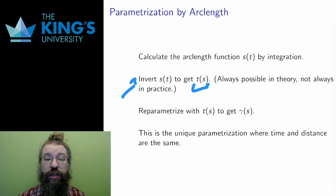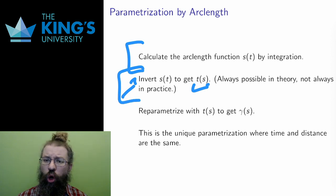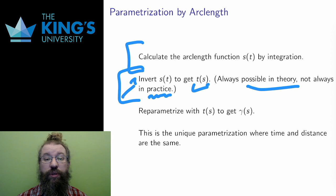First, calculate the arc length function S of t. Invert S of t to get some expression t of s. This is always possible in theory, but not always in practice. That is, the inverse exists, but it might not be writable in terms of the usual functions we work with. Then, reparametrize by replacing t with this expression t of s. The result is the parametrization by arc length.